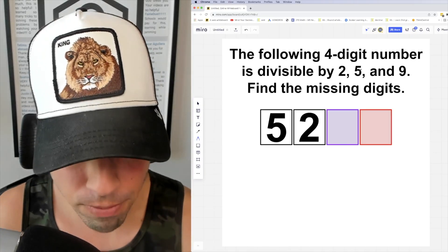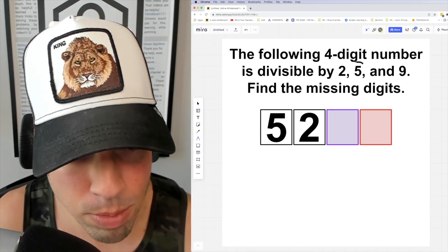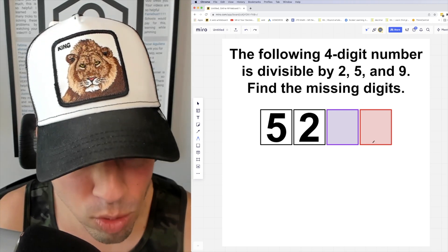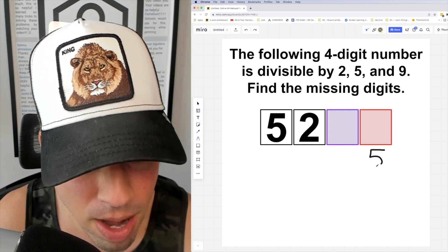So as we go along, the first thing I'm going to focus on is the fact that this must be divisible by 5. The reason why that's important is because that means the ones digit can either be 5 or 0. That's it.